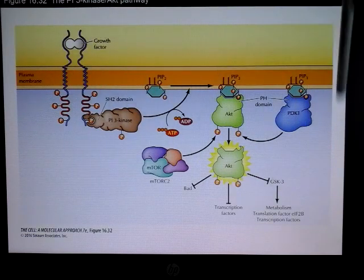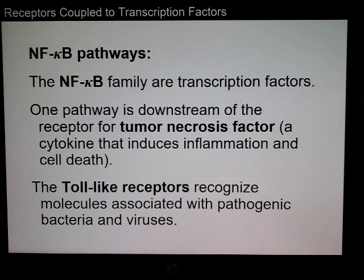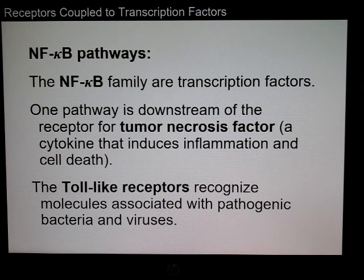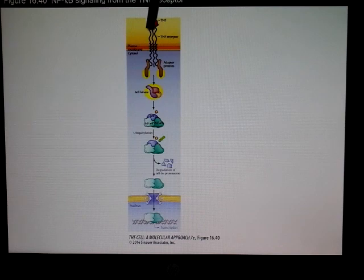There is a lot going on in cell signaling. NF-κB family members are transcription factors — one pathway is downstream of tumor necrosis factor, or TNF. We also have toll-like receptors that recognize molecules associated with pathogenic bacteria and viruses. All these pathways share a common theme: a stimulus at the top leads to activations and phosphorylations, ultimately resulting in transcription occurring in the nucleus.